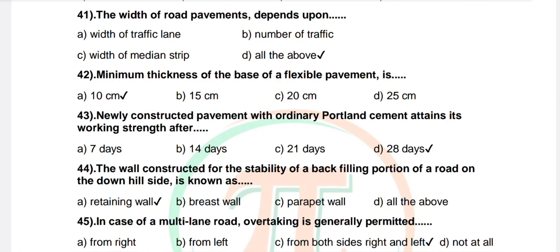Question 42: Minimum thickness of the base of flexible pavement is — options: 10 cm, 15 cm, 20 cm, 25 cm. Correct answer: 10 cm. Question 43: Newly constructed pavement with ordinary Portland cement attains its working strength after — options: 7 days, 14 days, 21 days, 28 days. Correct answer: 28 days.